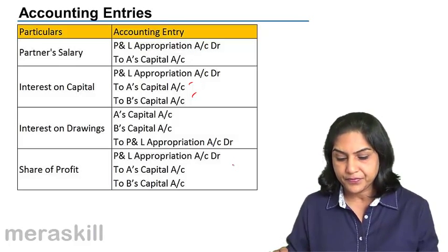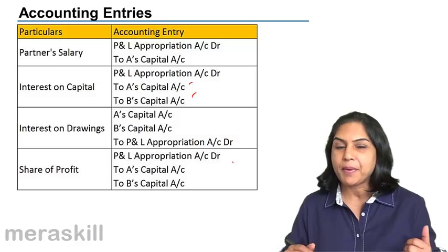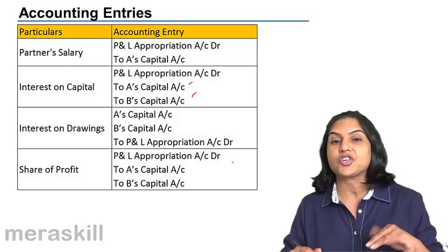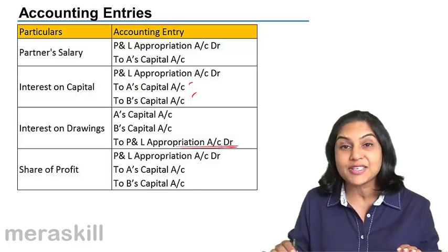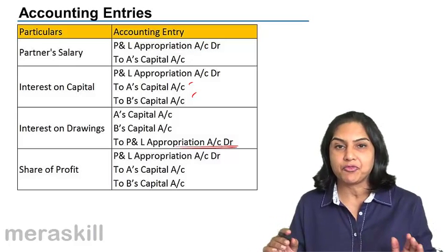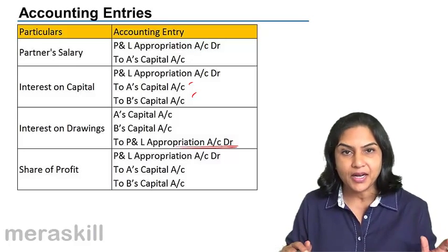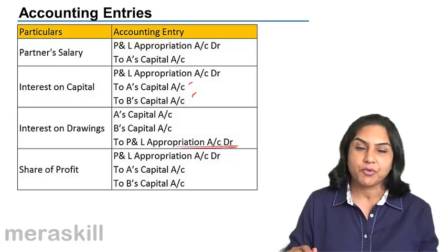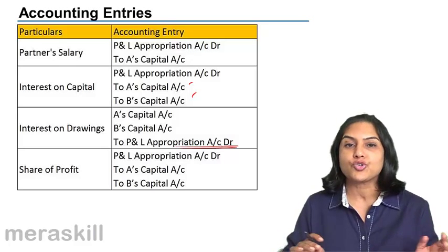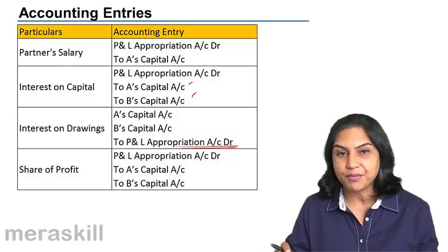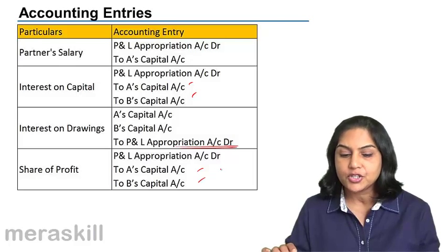Interest on drawings becomes an income for the partnership firm, because the partners have withdrawn money and the firm is charging interest on such withdrawal. So the Profit and Loss Appropriation Account is credited — it becomes income for the firm. Depending on who is charged, A's capital or B's capital is debited and the Profit and Loss Appropriation Account is credited for interest on drawings. Whatever balance remains goes to the partners' capital accounts in the agreed profit-sharing ratio: Profit and Loss Appropriation Account debit to A's capital, B's capital.